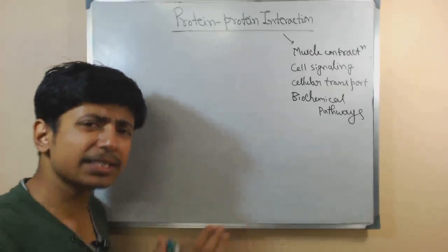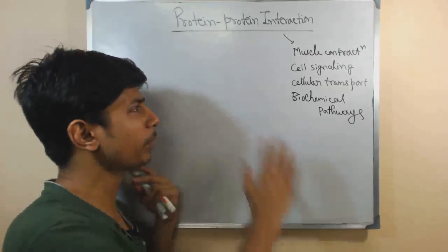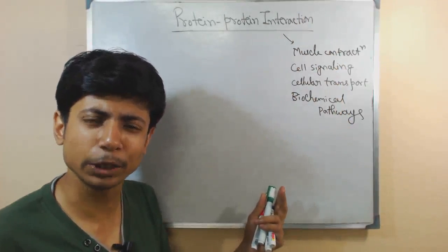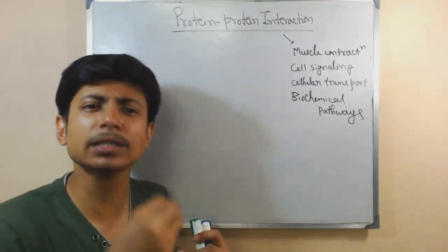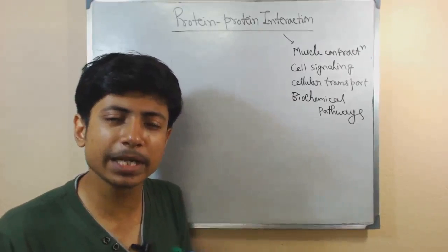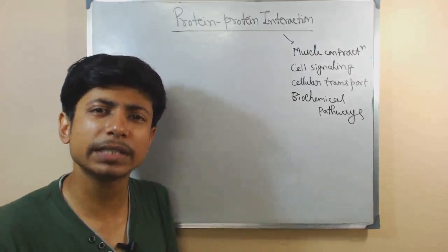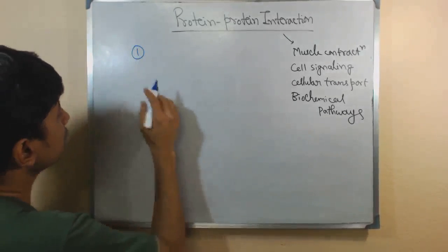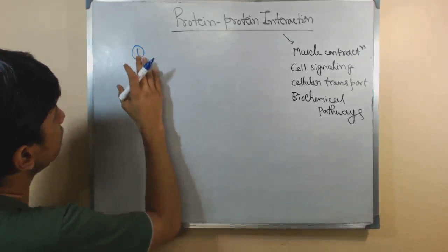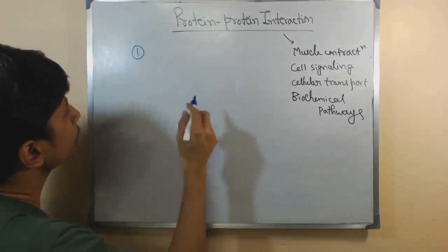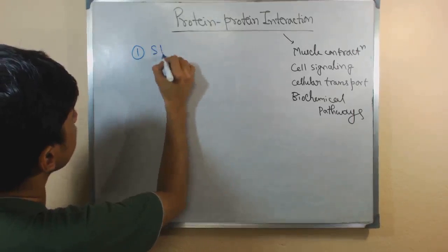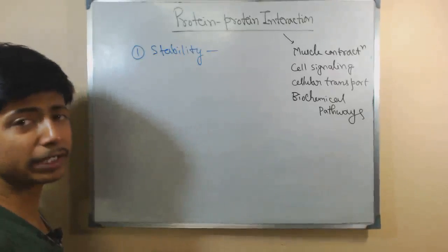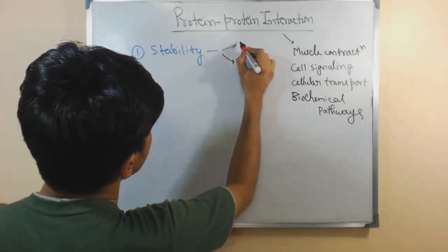There are certain types of protein-protein interaction. I cannot cover everything in this small video, so I am just going to tell you why it is important and what the different types are. Protein-protein interaction can be divided into different types based on different features. The first type I am going to talk about is based on stability.